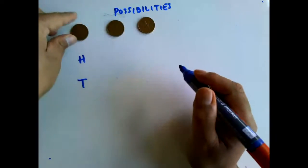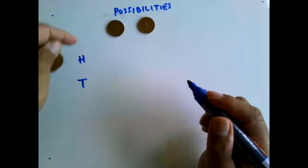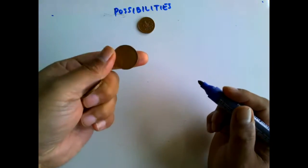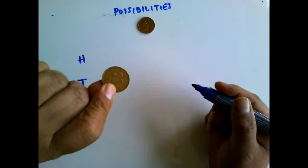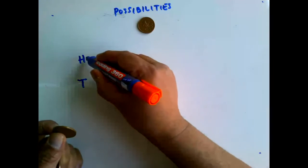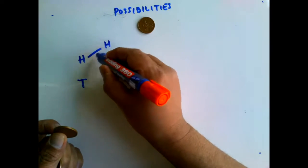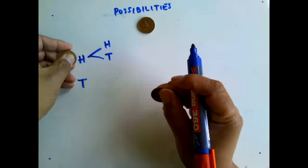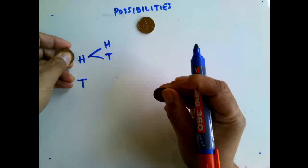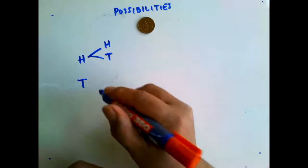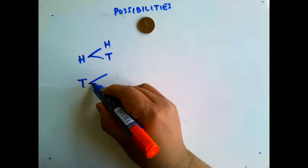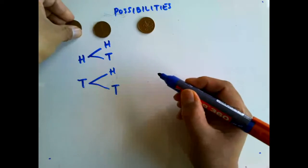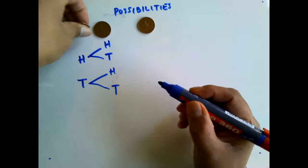On the second coin, it's also either heads or tails. So if the first one is a head, then the second could either be a head or a tail. And if the first is a tail, the second could also be a head or a tail.